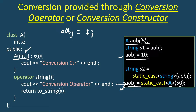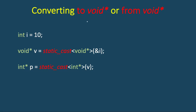Similarly, if we have a conversion operator — for example, a conversion-to-string operator defined inside a class — the class can be assigned to a string. Directly assigning the object to string s1 doesn't look very readable, and you may get confused when revisiting the code later. It's better to explicitly use static_cast in such situations. Another use case is converting any pointer type to void* or from void* to another pointer type — you should use static_cast in those situations as well.